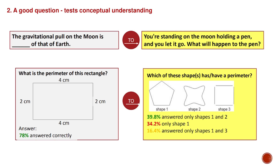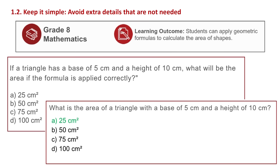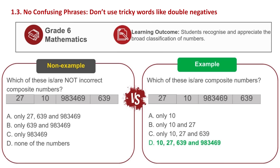Use direct questions and avoid extra details that are not needed. For example, a learning outcome might be: 'Students can apply geometric formulas to calculate the area of shapes.' — such as: 'If a triangle has a base of 5 cm and a height of 10 cm, what will be the area if the formula is applied correctly?' Also, do not use confusing pairs or double negatives. For example, in Grade 6 Mathematics, rather than asking 'Which of these is not correct in the composite numbers,' ask 'Which of these is a composite number?'